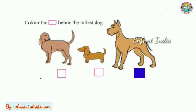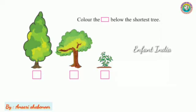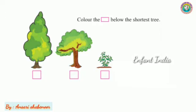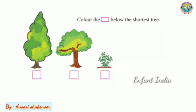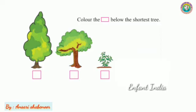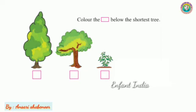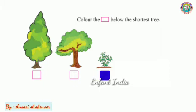Now we are going to see another example. Color the box below the shortest tree. Here, how many trees? Very good — one, two, three. There are three trees. The question is: color the box below the shortest tree. Shortest means the smallest. You need to find out which one is the smallest tree.